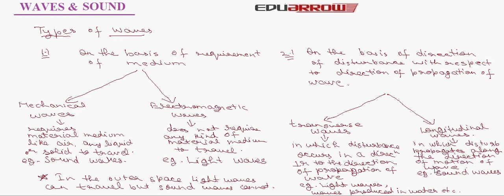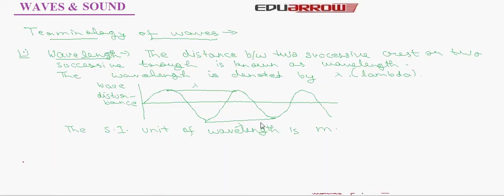Now let us talk about terminology of waves. First, let us discuss wavelength. The distance between two successive crests or two successive troughs is known as wavelength. The wavelength is denoted by lambda. The SI unit of wavelength is meter. In the given figure, these are the crests and the distance between these crests is the lambda which is the wavelength. Or the distance between these troughs is the wavelength, lambda.